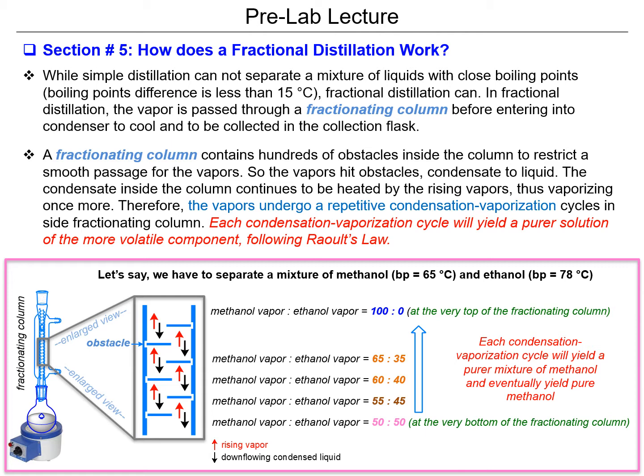For example, with a methanol and ethanol mixture, at the beginning of boiling you will find a 50-50 mixture of these alcohols. But as heating continues, the more volatile solvent — methanol — will go faster through the circulating path of the fractionating column, whereas ethanol will go slower. So the first drops you collect from the fractionating column will be methanol.